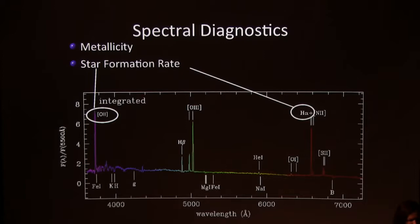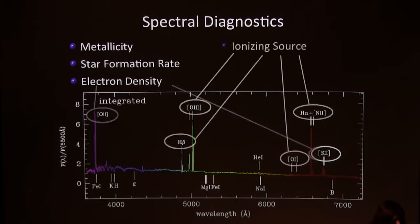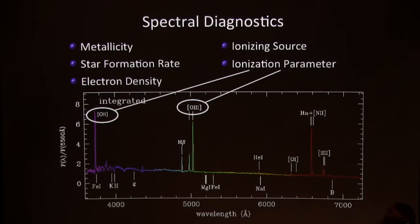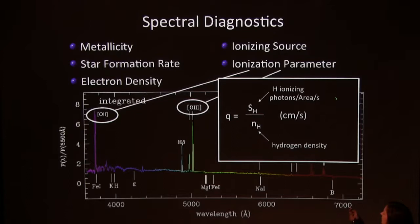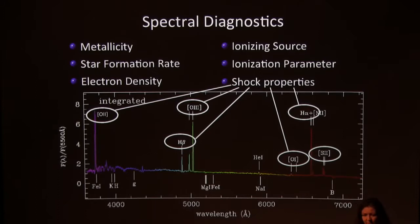We measure the star formation rate using H-alpha and O2, and we can measure the electron density using the sulfur-2 and oxygen-2 lines. We can look at the ionizing source — the power source within galaxies — using various emission lines sensitive to the hardness of the EUV radiation field. We can measure the ionization parameter, defined as the number of hydrogen-ionizing photons per unit area per second — a flux divided by hydrogen density in units of velocity. You can think of it as the maximum velocity ionization front that a radiation field can drive through a nebula.